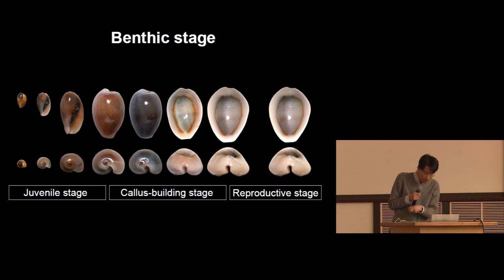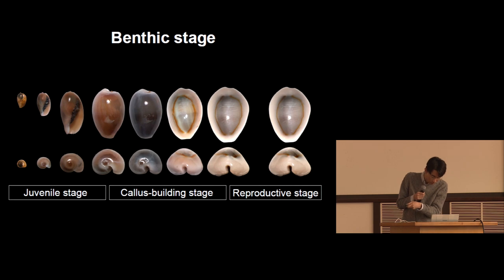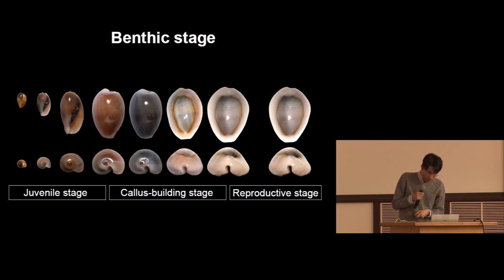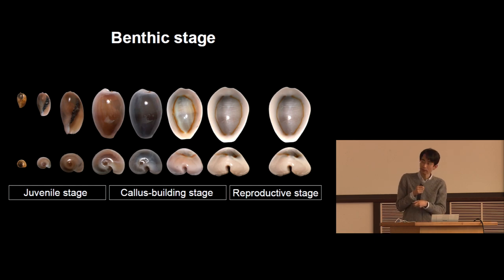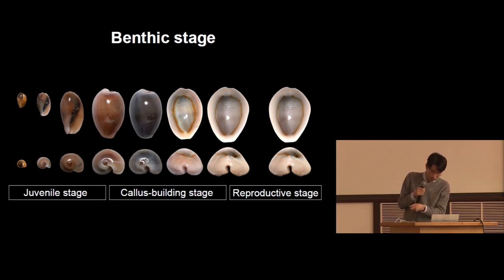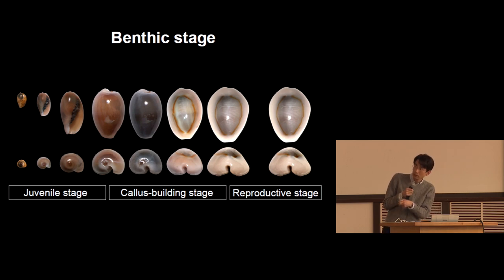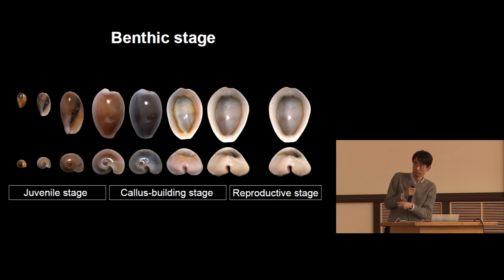The growth of the juvenile shell continues until the end of the juvenile stage. Cowries keep thickening the cowl by coating the outer surface of the juvenile shell with calcareous materials during the cowl-building stage. After that, cowries sexually mature and begin reproduction.